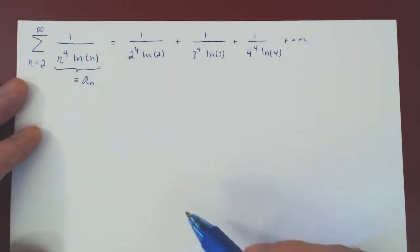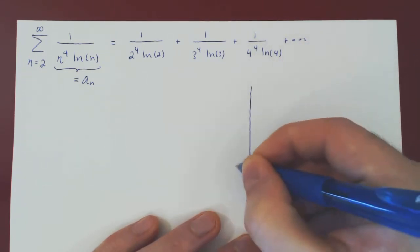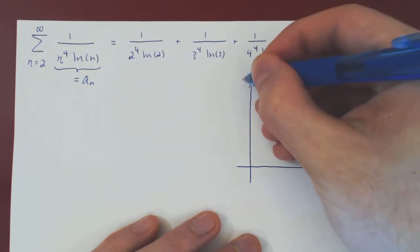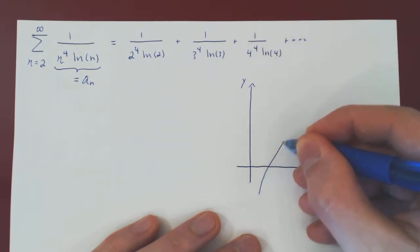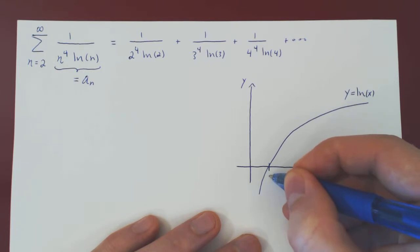Let's look at the graph of ln of n just for a second. So y equals ln of x. We know that ln of 1 is 0.